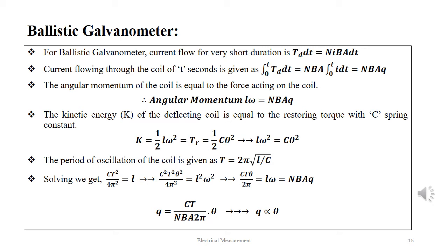The kinetic energy K of the deflecting coil equals the restoring torque: ½·L·omega² = ½·C·theta², giving L·omega² = C·theta². The period of oscillation is T = 2π√(L/C). Solving gives C·T²/(4π²) and T²·theta²/(4π²) = L²·omega². Thus the charge q = (C·T)/(N·B·A·2π) × theta, showing that charge q is proportional to deflection theta.